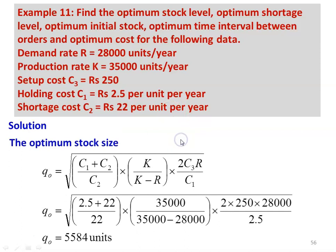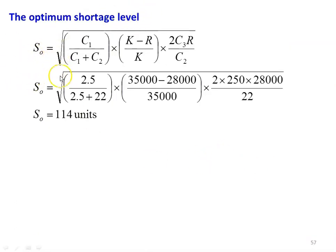Optimum stock level QO = √[(C1 + C2)/C2 × K/(K − R) × 2C3R/C1]. Substituting: √[(2.5 + 22)/22 × 35,000/(35,000 − 28,000) × 2 × 250 × 28,000/2.5]. Calculating, QO = 5,584 units. Optimum shortage level SO = √[C1/(C1 + C2) × (K − R)/K × 2C3R/C2]. Substituting: √[2.5/(2.5 + 22) × (35,000 − 28,000)/35,000 × 2 × 250 × 28,000/22]. Calculating SO = 114 units.